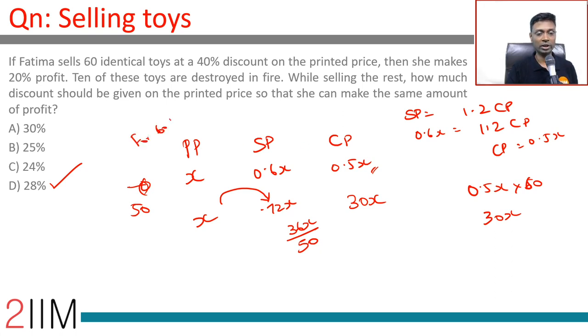Going over the whole process for 60 toys, the numbers look like this: printed price is x, selling price is 0.6x because discounted by 40%. This returns a 20% profit, or my cost price is 0.5x for each of the goods, therefore the math works.